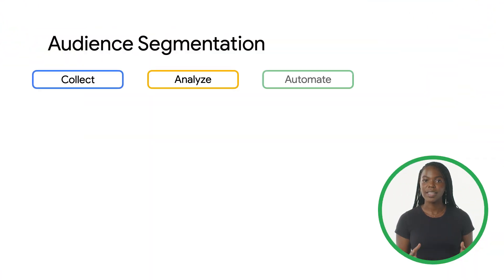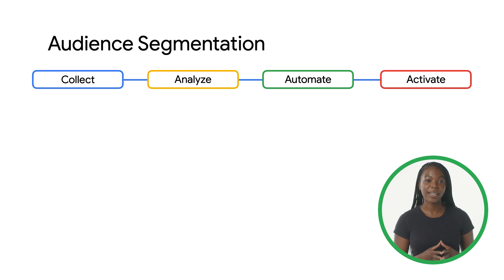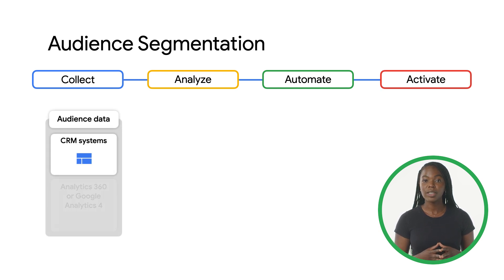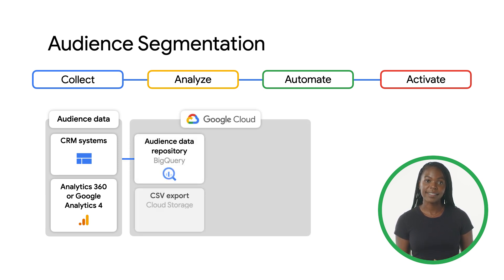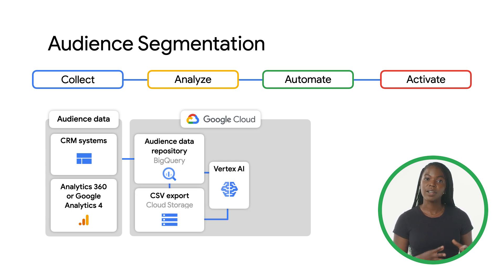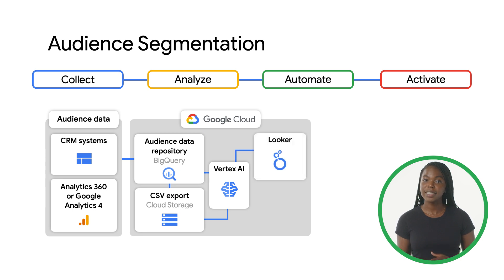The first way your organization can leverage Google Cloud is through audience segmentation. You can leverage Google Cloud machine learning to build differentiated audiences to be used in your analysis and in your marketing campaigns. Audience data often lives in multiple places, from CRM systems to web analytics like Google Analytics 360 or Adobe Analytics.